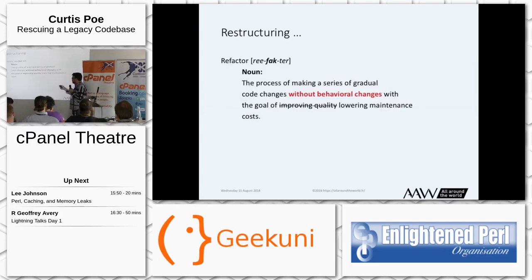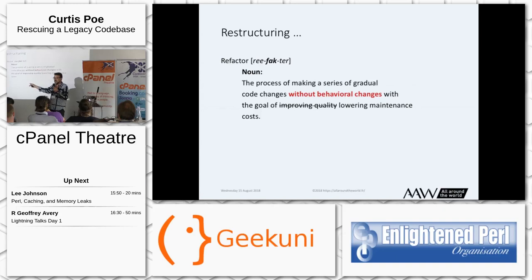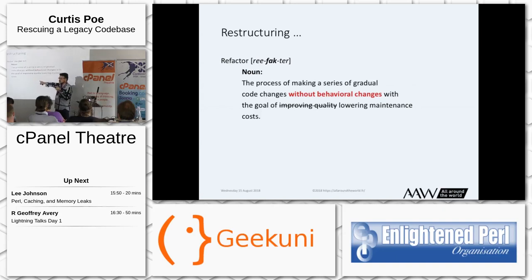So restructuring your code — what is that? It's a process of making a series of gradual changes without behavioral changes, with the goal of — not improving quality, which the manager doesn't care about — but lowering maintenance costs. You're talking about money. That's what they're looking for.